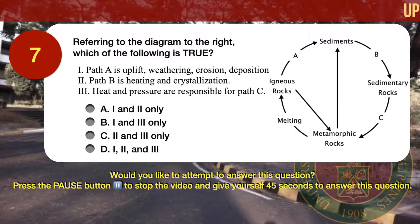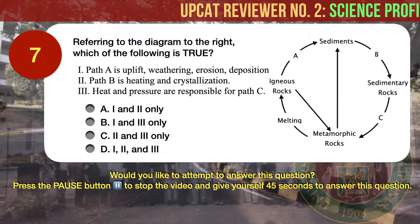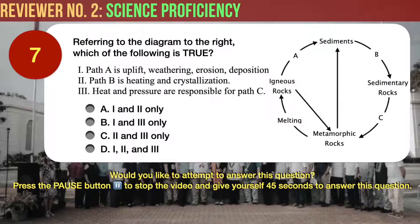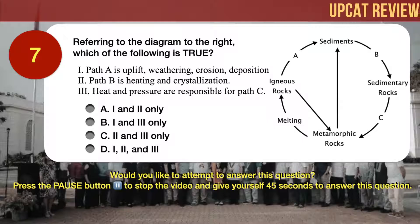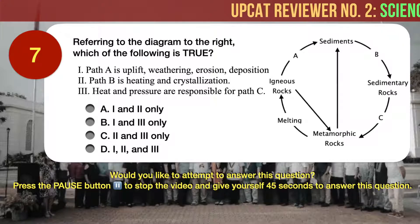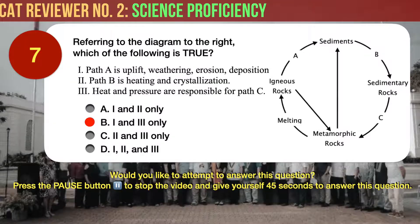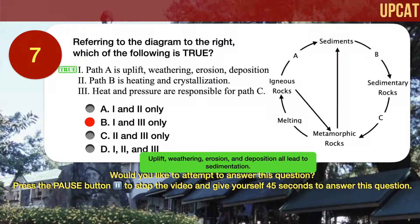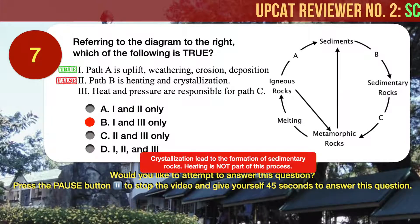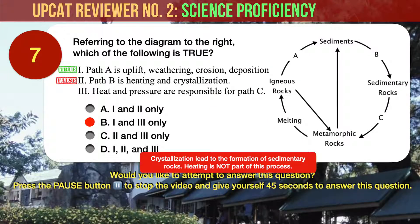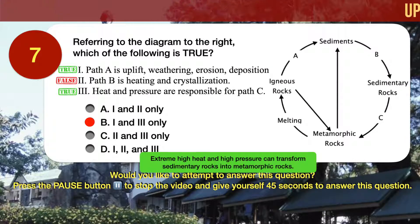Question number 7. Referring to the diagram, which of the following is true? 1. Path A is uplift, weathering, erosion, deposition. 2. Path B is heating and crystallization. 3. Heat and pressure are responsible for path C. Answer choices: A, 1 and 2 only. B, 1 and 3 only. C, 2 and 3 only. D, 1, 2, and 3. The correct answer is B, 1 and 3 only. Uplift, weathering, erosion, and deposition all lead to sedimentation, so 1 is true. Crystallization, or accumulation of sediments followed by cementation, leads to sedimentary rocks — heating is not part of this process, so 2 is not true. Extreme heat and high pressure can transform sedimentary rocks into metamorphic rocks, so 3 is true.